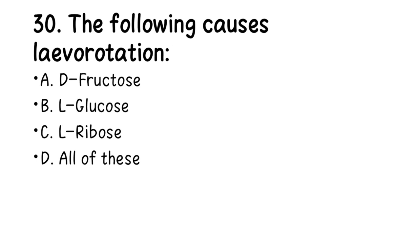Number 30. The following causes levorotation: A. D-fructose, B. L-glucose, C. L-ribose, D. All of these. The right answer is D — all of these. Whatever molecule has the L-notation causes levorotation, and D-fructose also causes some degree of levorotation.